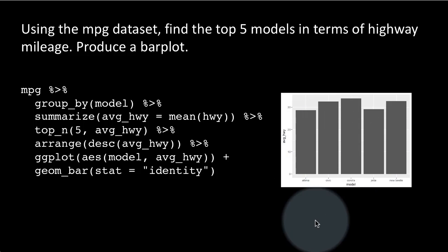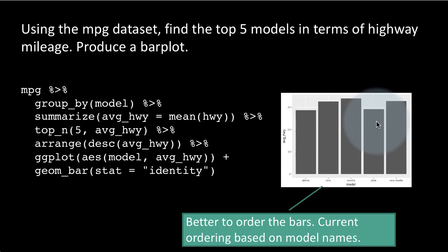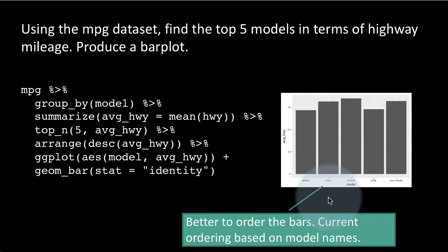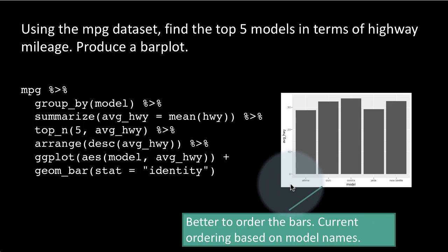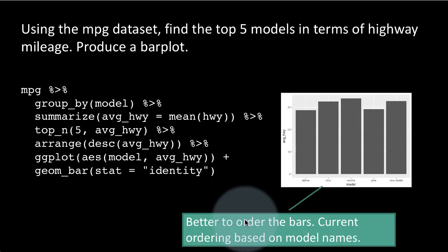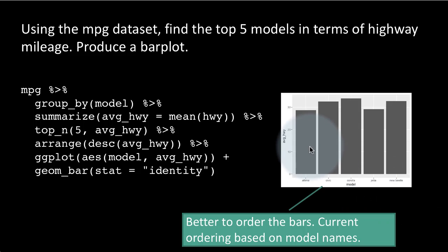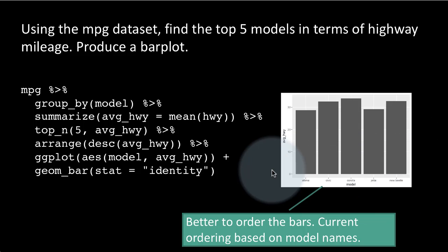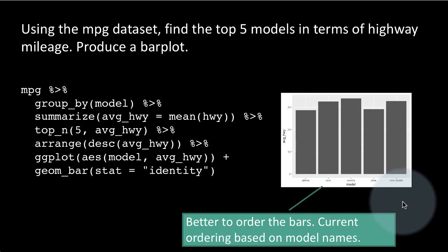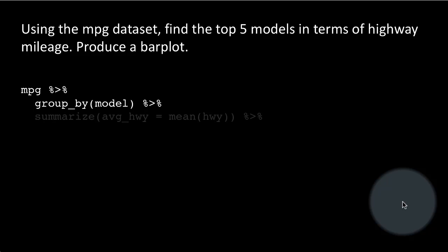This result is not very satisfactory. When you look at a bar plot you would like it to be ordered by the height of the bar. Currently, by default, it has been ordered by the names of the models — notice the model names are in ascending alphabetical order. By default, a bar plot orders the bars by the value of whatever is on the x-axis. So in order to get the bars in ascending order of height, we have to change the way ggplot is treating those model names, which we'll show in the next slide.